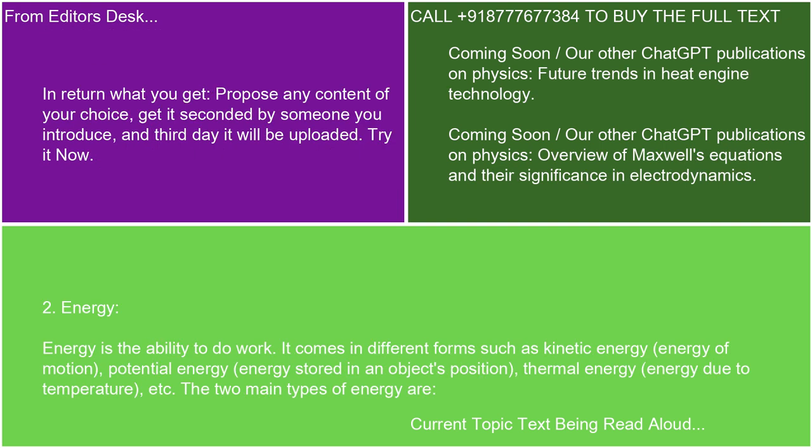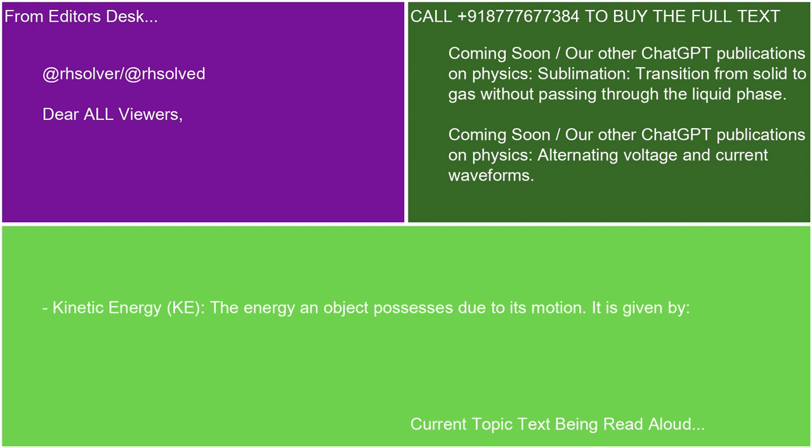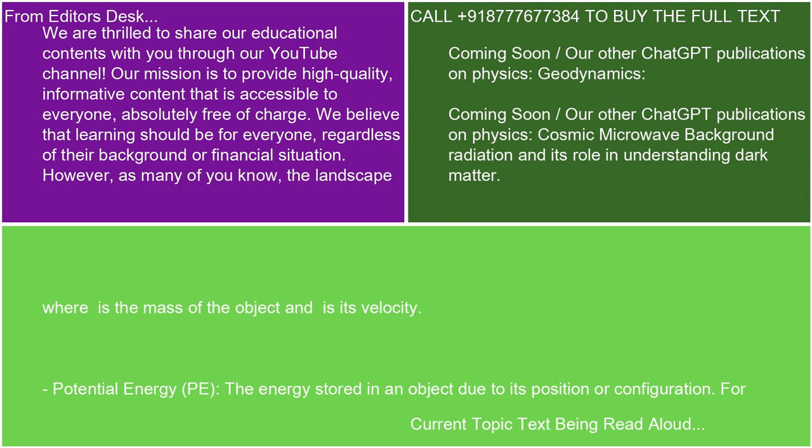Energy is the ability to do work. It comes in different forms such as kinetic energy (energy of motion), potential energy (energy stored in an object's position), thermal energy (energy due to temperature), etc. The two main types of energy are kinetic energy (KE), the energy an object possesses due to its motion. It is given by KE = ½mv², where m is the mass of the object and v is its velocity.